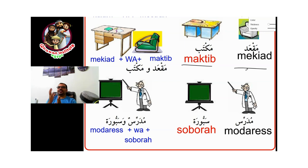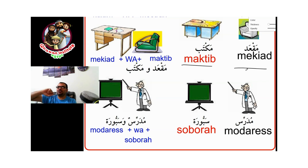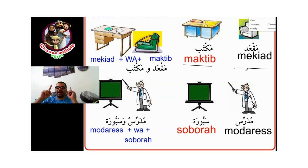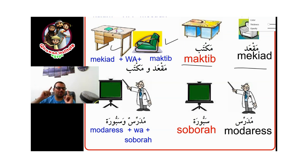Now I need to say couch and desk. Do you remember the last lesson? 'Wa' means 'and'. So: miq'ad wa maktab — couch and desk.